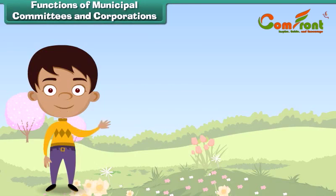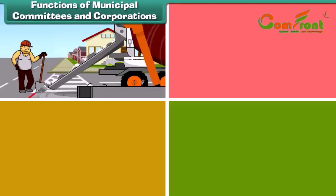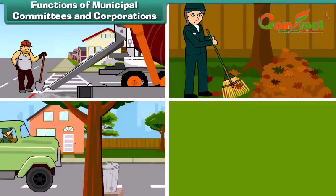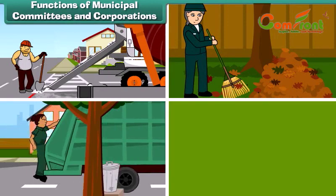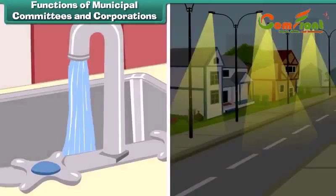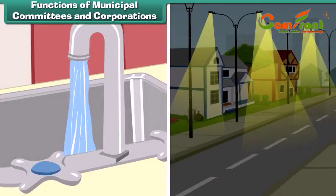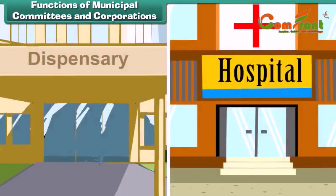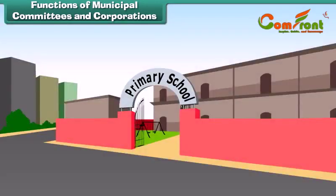Municipal committees and corporations look after maintenance of roads, maintenance of parks and gardens, removal of garbage, drainage of water, supply of clean drinking water to people, street lighting, opening of hospitals, dispensaries and healthcare centers, and opening of primary schools.